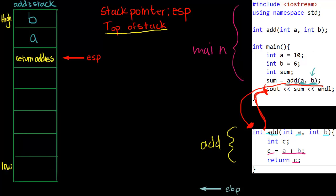Now on to the important part of this video. Say we get to this line in our code - when we call `add`, we go over to where it's implemented and start executing it. We've passed the arguments, and then we get to this line here which declares a local variable. A local variable is just a variable that belongs to a function - a variable that is local to that function. So where does this local variable go?